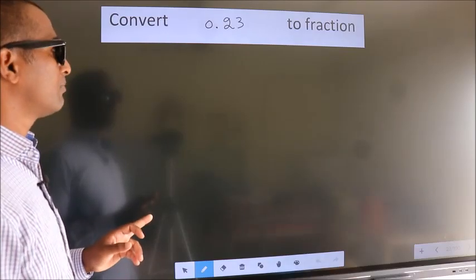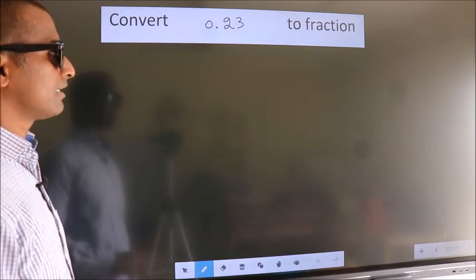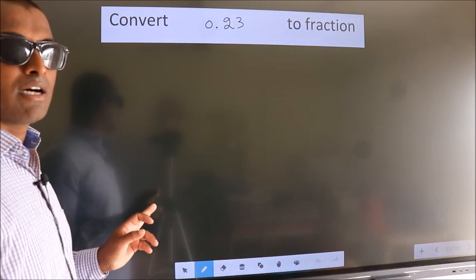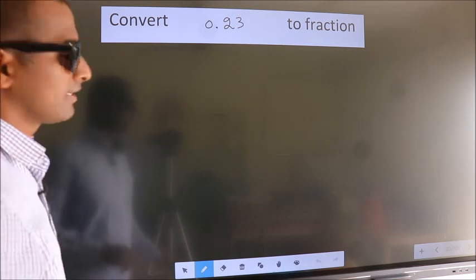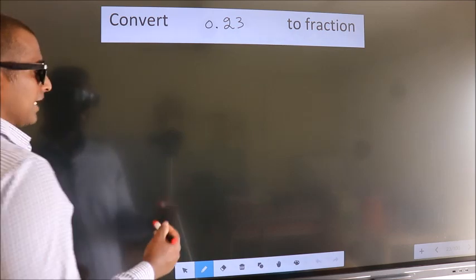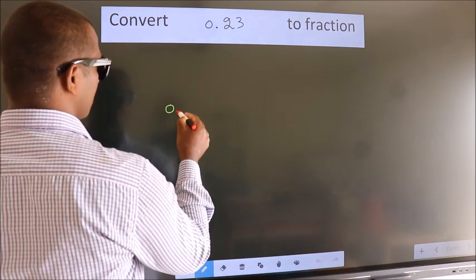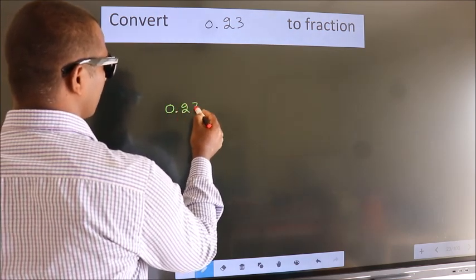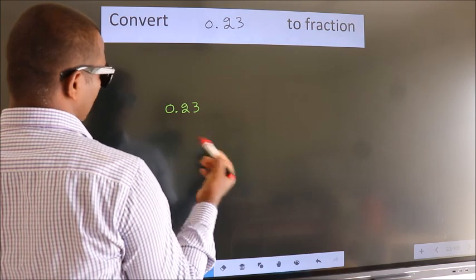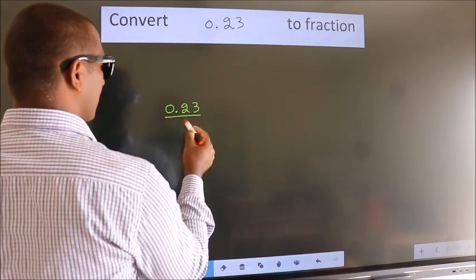Convert 0.23 to a fraction. How do we convert this? Given is 0.23. You take it as 0.23 over 1.